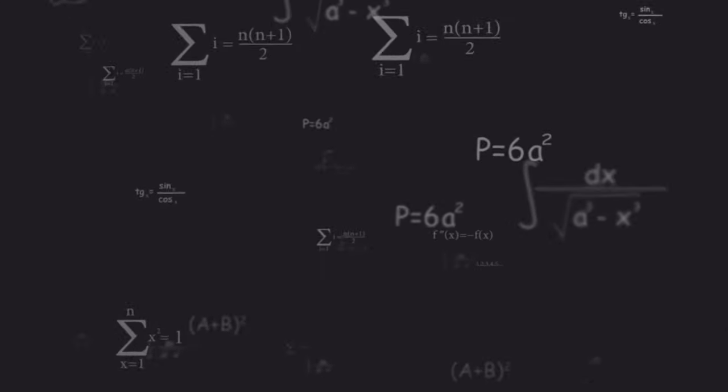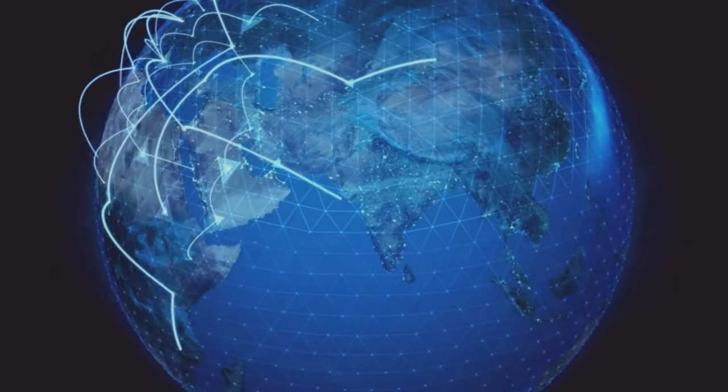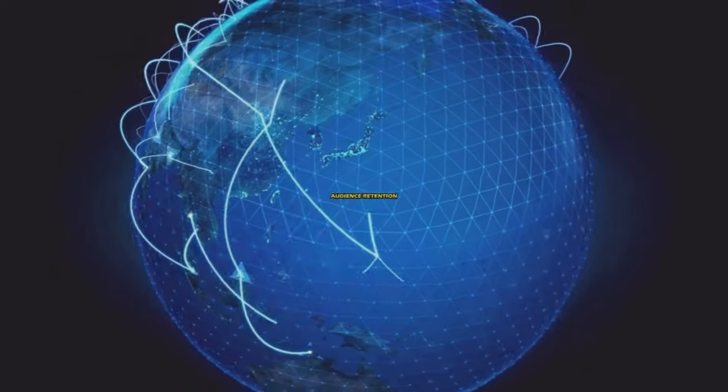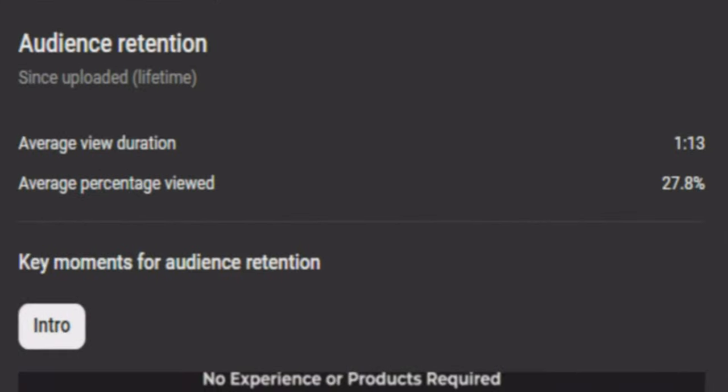Before I give you this script template, I need you to understand this like you understand fire is hot. You have to structure your videos very specifically for YouTube, and here's why. One of the most important metrics you have to master if you want YouTube to show your videos to thousands of viewers is audience retention. If you want YouTube to make your content go viral, you have to prove to YouTube that you actually have content that people want to watch, and YouTube measures that by your video's audience retention.